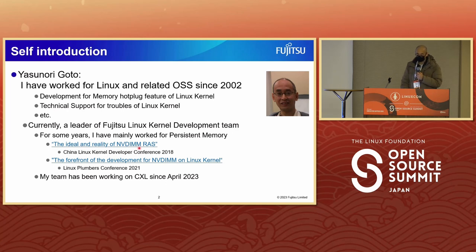My name is Yasunori Goto. I have worked for Linux and related OSS since 2002. I developed the memory hotplug feature of the Linux kernel and worked on technical support for Linux kernel issues. Currently I am a leader of Fujitsu Linux kernel development teams. For some years I mainly worked on persistent memory and presented on that topic. My team has been working on CXL since April 2023.